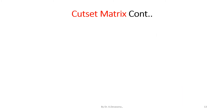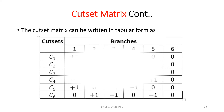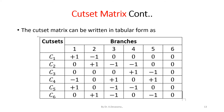The cut set matrix can be written in tabular form. Here we have 6 cut sets C1, C2, C3, C4, C5, and C6, and we have branches 1, 2, 3, 4, and 5. We have represented the value for each cut set.